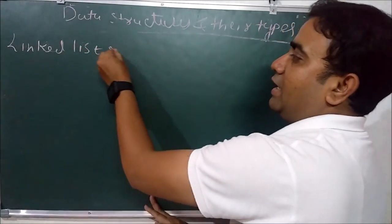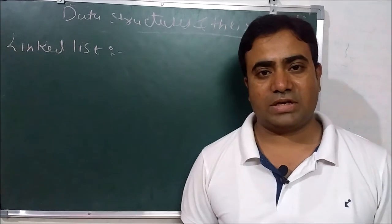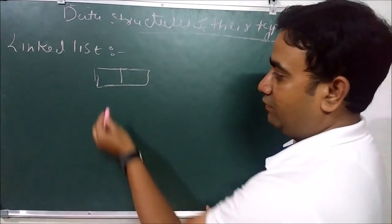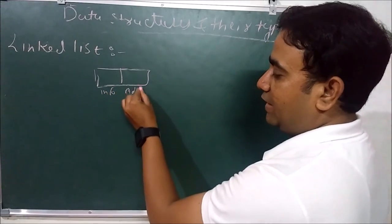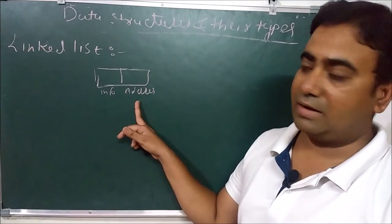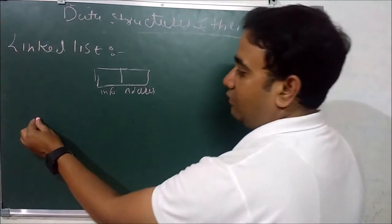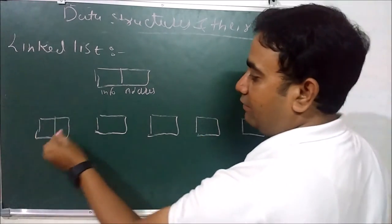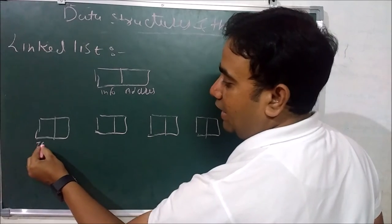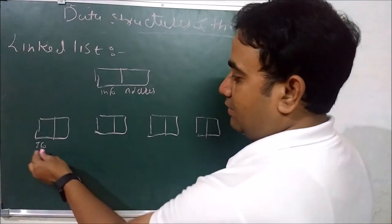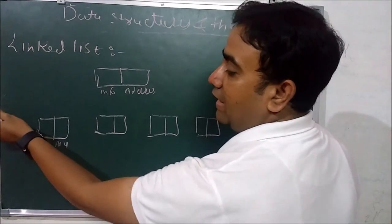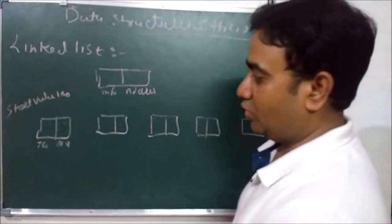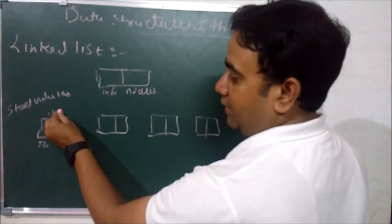Linked list is also a linear data structure. In a linked list, data is stored in node form. Every node has two parts: the first part is the info part, and the second part is the address part. Every address part links to another node's address. Suppose we have five nodes — first, second, third, fourth, fifth — and every node has two parts: info part where we store our data, and address part.